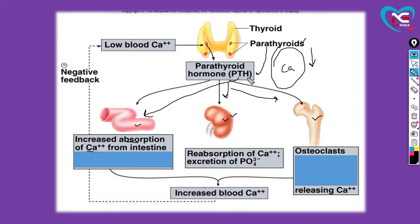Second aata hai kidney. Toh PTH hormone kya kehta hai kidney se ki filtration ke time pe tum zyada se zyada calcium absorb karke blood mein bhejdo, urine mein mat nikalna. Toh kidney kya karti hai? Zyada se zyada calcium absorb karti hai aur blood mein bhejtati hai. Saath hi saath, aapki bone se bhi calcium absorb hokar blood mein aa jaata hai.